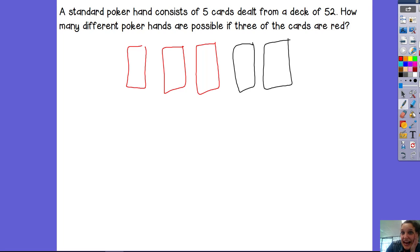So this is an and situation. We are choosing three red cards and two black cards simultaneously. So it's two separate combinations, but we are going to multiply those together since it's and.